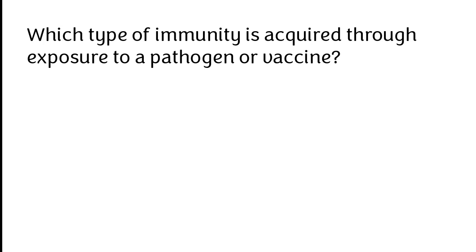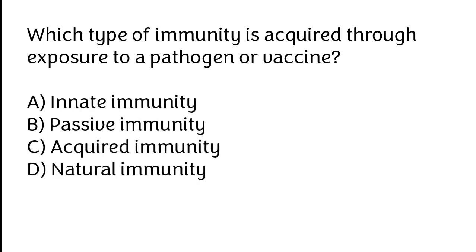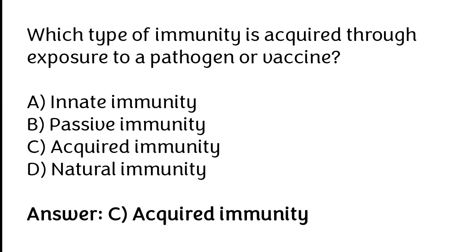Which type of immunity is acquired through exposure to a pathogen or vaccine? Innate immunity, passive immunity, acquired immunity, natural immunity. The correct answer is option C. Acquired immunity is the type of immunity acquired through exposure to a pathogen or vaccine.